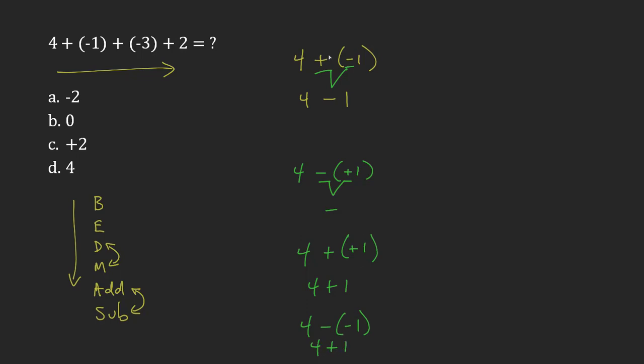So we have two signs that are different. That leaves me with 4 minus 1. So that part is—let's just finish that off—that part is 3. So this part here is 3.